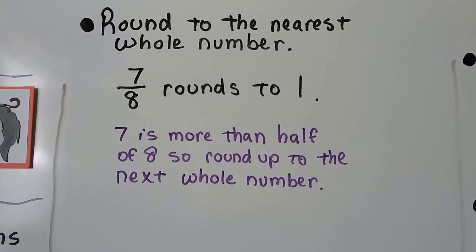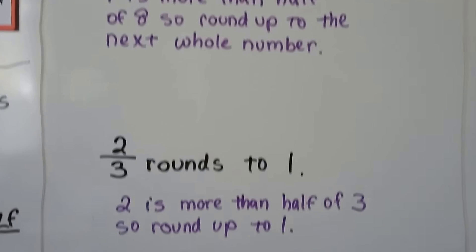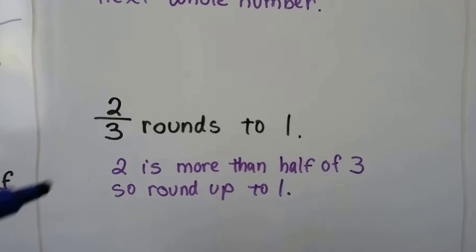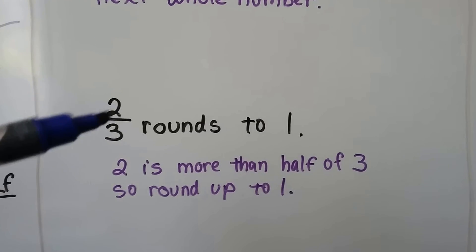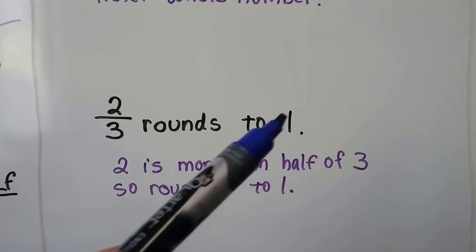We round it to the next whole number. 2 thirds - the 2 is more than half of 3. 2 thirds is really close to 3 thirds, so we're going to round that to 1.